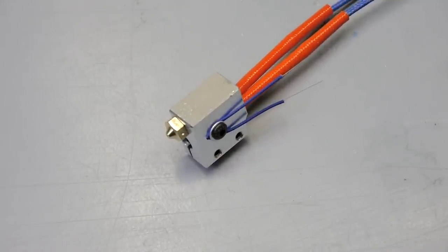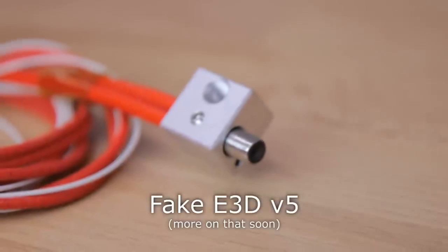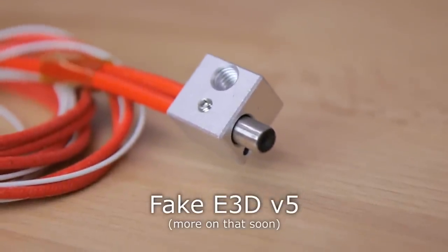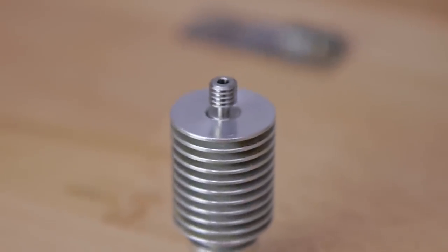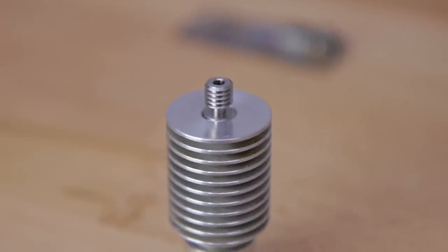Either way, just like on the V6, it's sure to make much better contact with the heater block than other solutions, for example using a grub screw and such. Now since this is basically just a new heater block and nozzle, it still uses the standard M6 thread for the heatbreak, which means that the Volcano should work with any hotend E3D ever released.